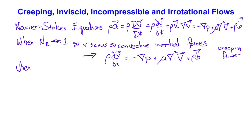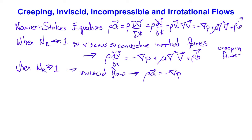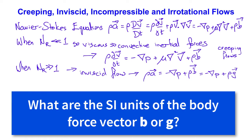When the Reynolds number is much greater than 1, we can neglect the viscous forces, and for a so-called inviscid flow, the Navier-Stokes equations become density times acceleration equals minus the pressure gradient plus the body forces, which are frequently written as rho times g since they are invariably due to gravity. This famous simplification is known as the Euler equation.